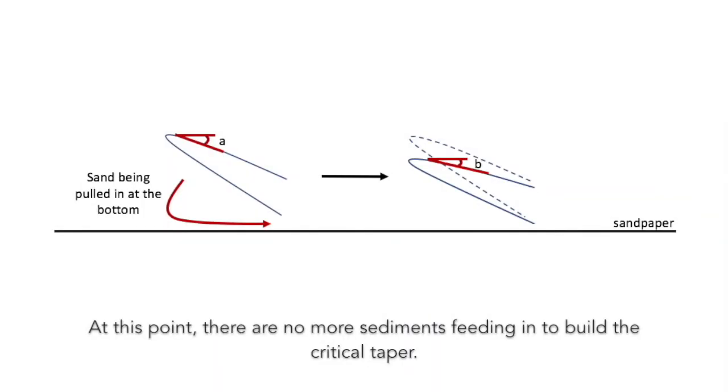At this point, there are no more sediments feeding in to build the critical taper. Therefore, sediments are pulled along the sandpaper at the bottom, causing the dip of the forethrusts to decrease.